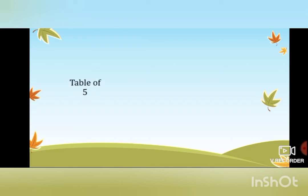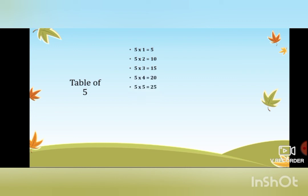Let us say the table of 5 for the last time. Five ones are 5, five twos are 10, five threes are 15, five fours are 20, five fives are 25, five sixes are 30, five sevens are 35, five eights are 40, five nines are 45, five tens are 50.